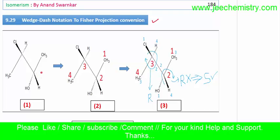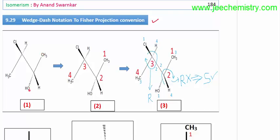If this Wedge-Dash projection formula is given, we have to number the longest carbon chain. We can number from this side or from this side. If you number from one side, chlorine will come at position 1; if you number from the other side, the alcohol group will come. Since alcohol is a functional group, we should number from that side: 1, 2, 3, 4.